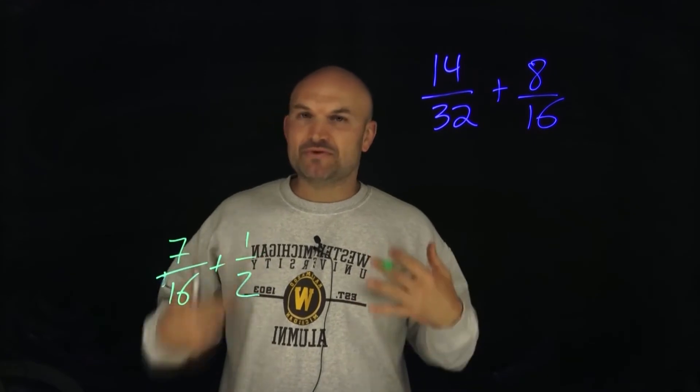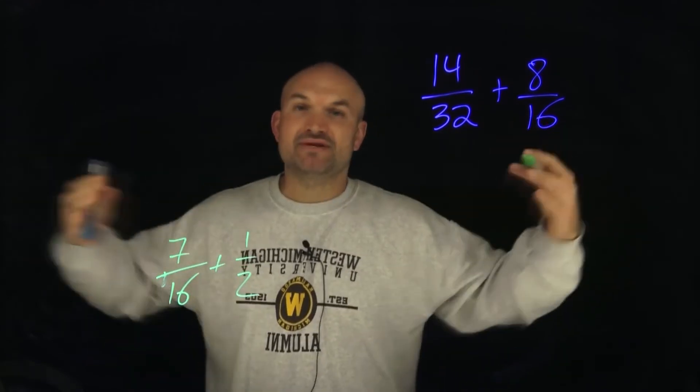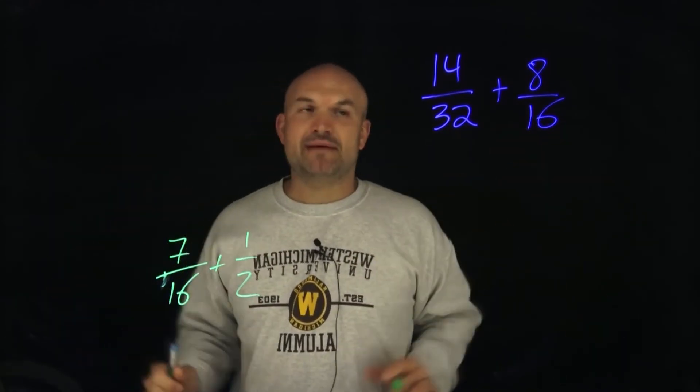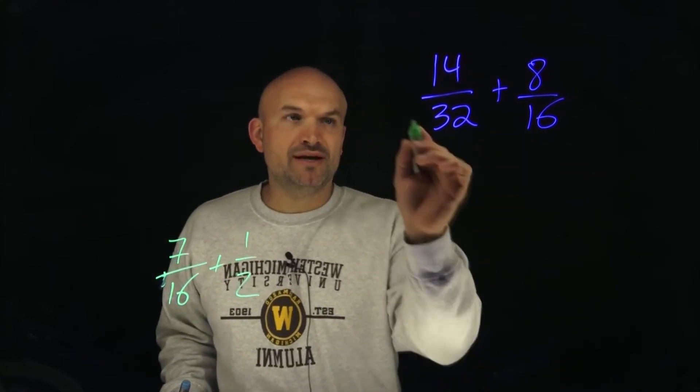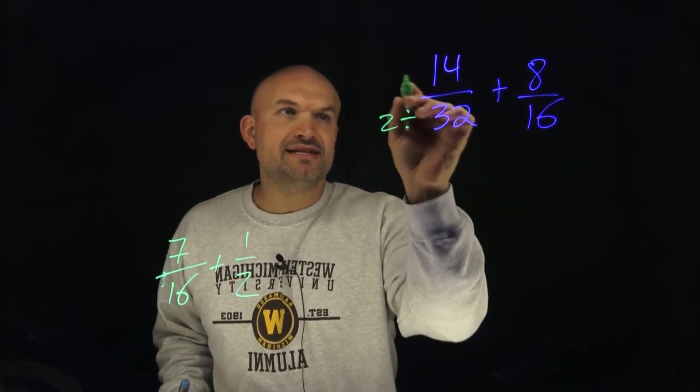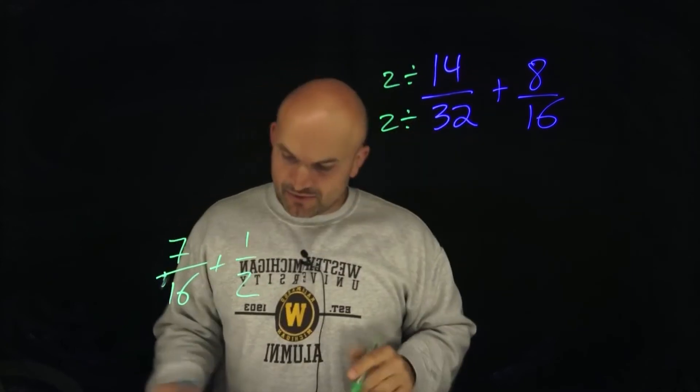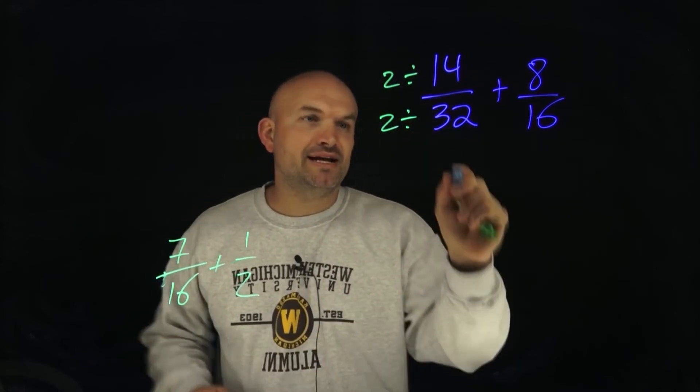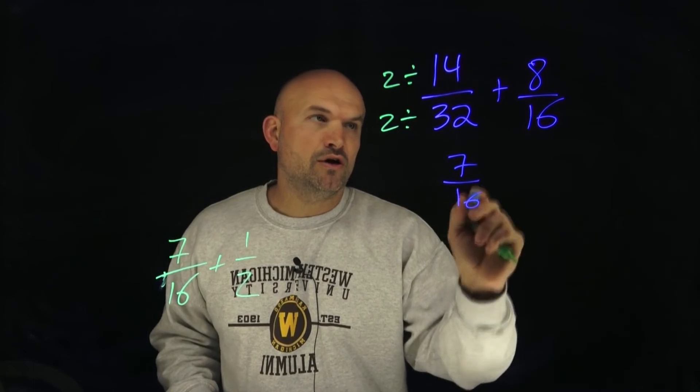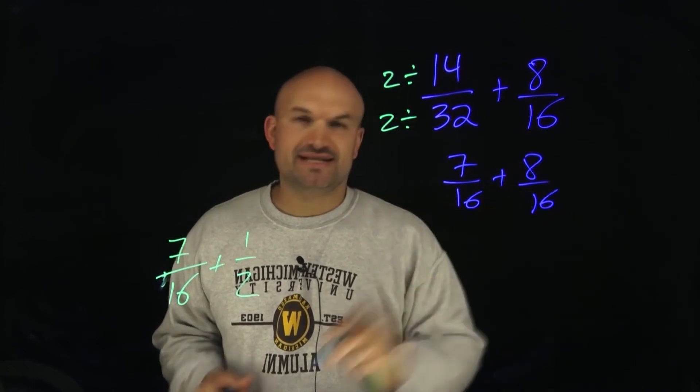So sometimes, a lot of times we're so conditioned to always be multiplying numbers on both fractions to get the common denominator. But in this problem, all we simply need to do is divide the left-hand side by 2. Because when we do that, what we now obtain here is 7 over 16 plus 8 over 16.